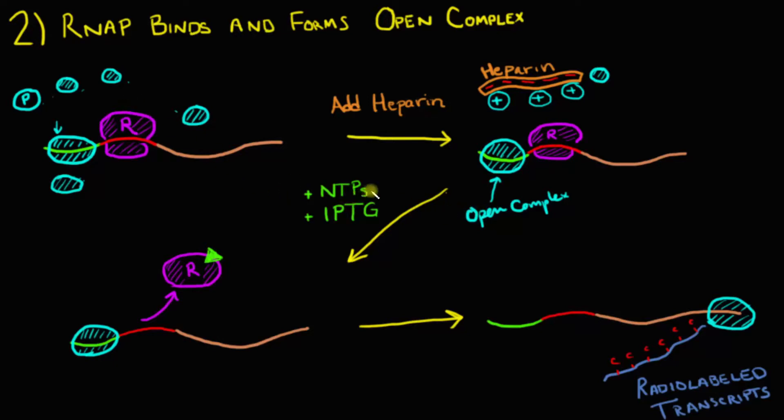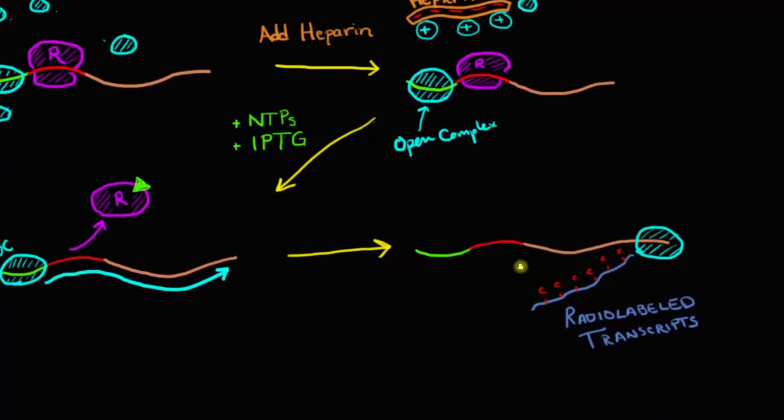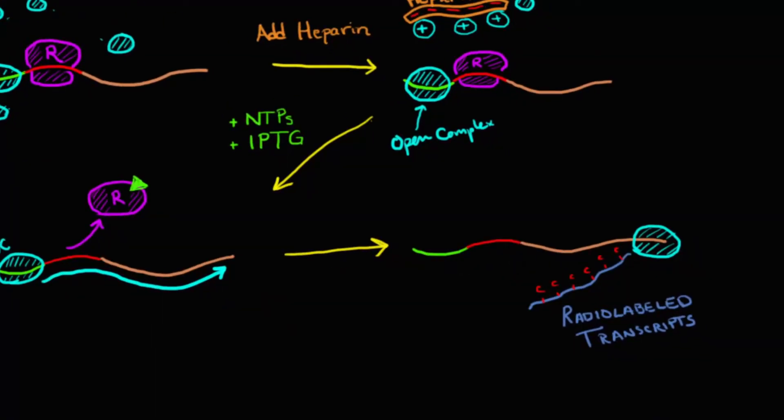Now when we add our NTPs and our IPTG, you get the removal of the repressor, and now RNA polymerase in an open complex is all set to transcribe our gene. At the end of this process, we will see the production of radiolabeled transcripts, here with the C being our radiolabeled CTP.